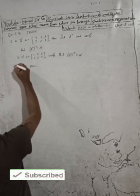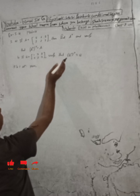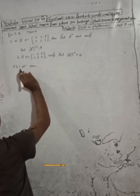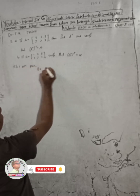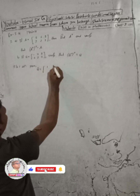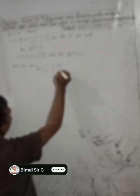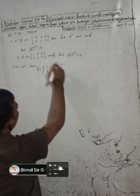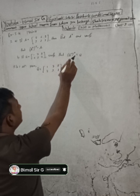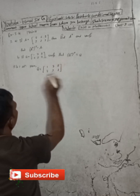Part d, number one: if Q is equal to one seven eight, two three seven — verify that the transpose of Q transpose is equal to Q. So here, given Q is equal to one seven eight, two three seven. We have to verify Q transpose and then its transpose. First of all, we have to find Q transpose.